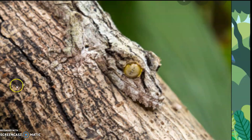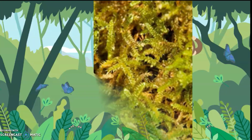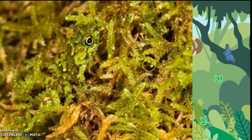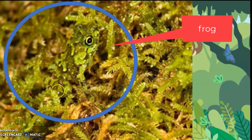What animal is hiding here? What animal can you see here? It's a lizard. Can you see the eyes? This is the body of the lizard — it's on the bark of a tree. Next, what animal is hiding here? Can you guess? There it is. It's a frog.